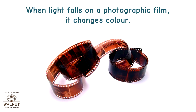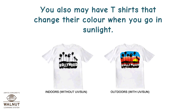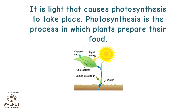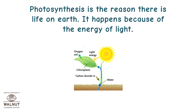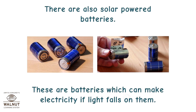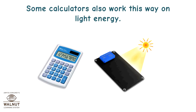Light is also a form of energy. When light falls on a photographic film, it changes colour. You may also have t-shirts that change colour when you go into sunlight. It is light that causes photosynthesis to take place — the process in which plants prepare their food. This does not happen unless there is light. Photosynthesis is the reason there is life on earth, and it happens because of the energy of light. There are also solar-powered batteries and calculators that work on light energy.